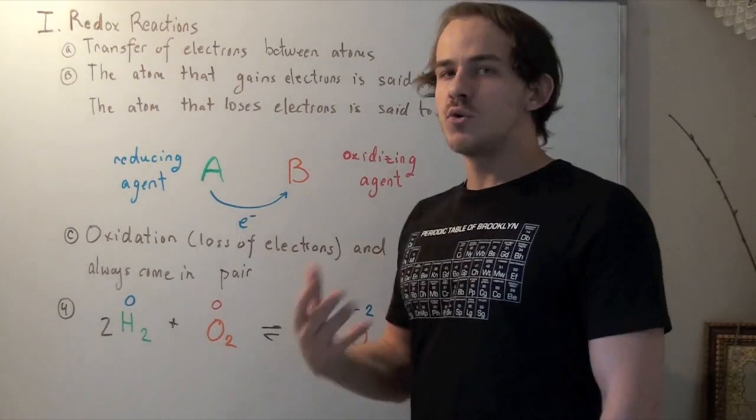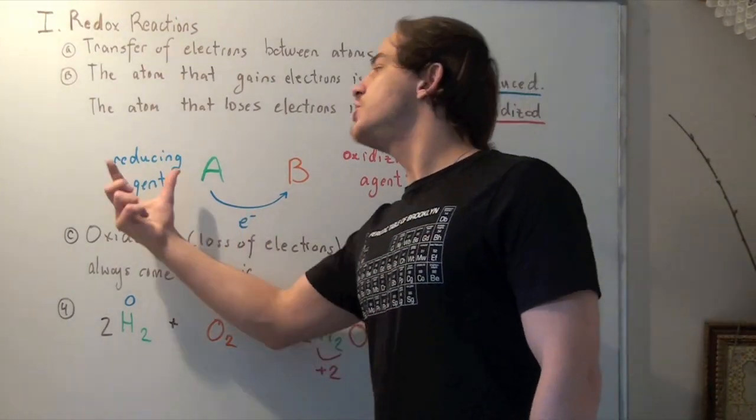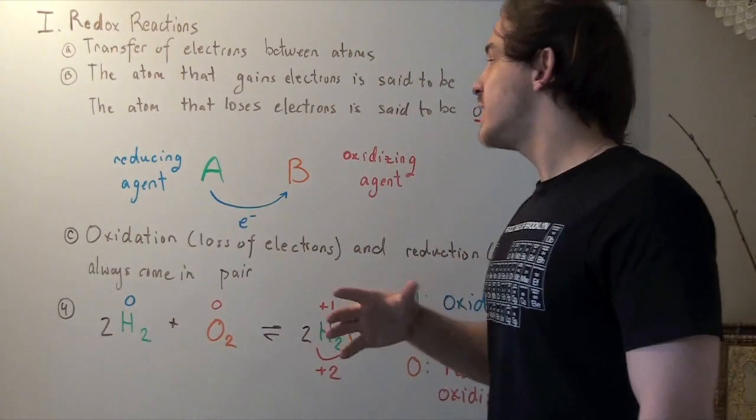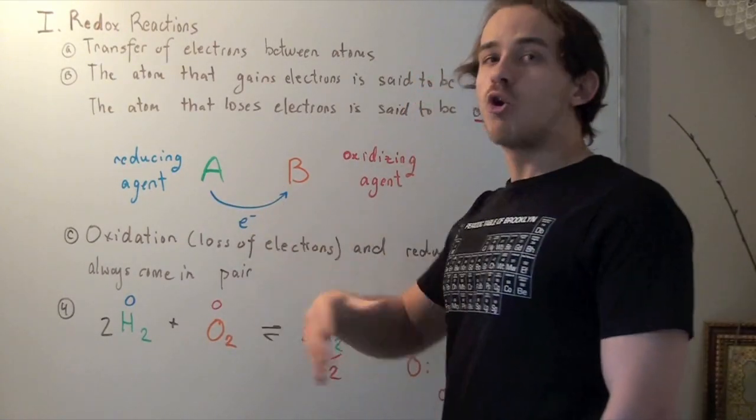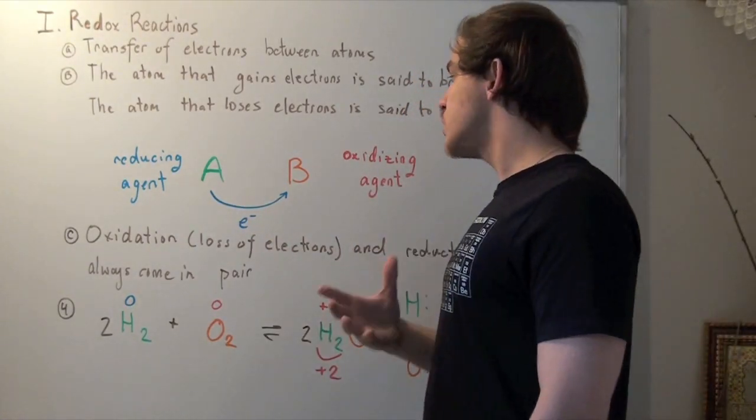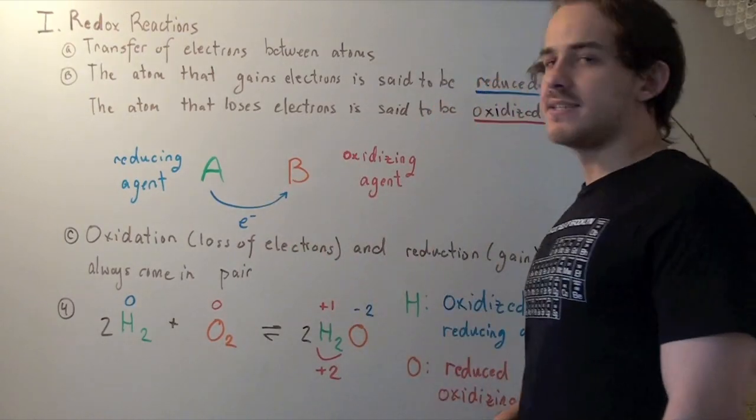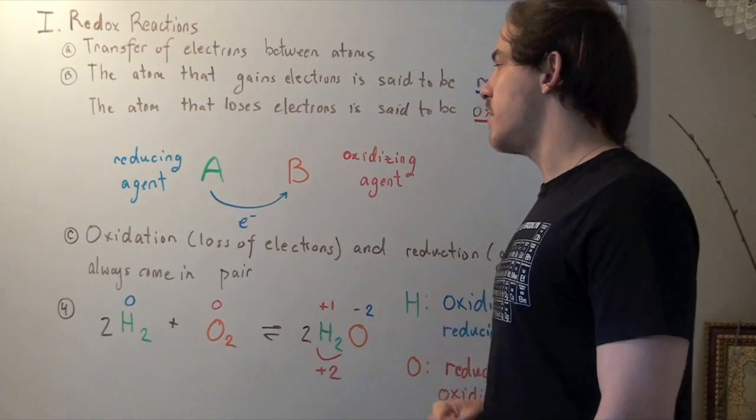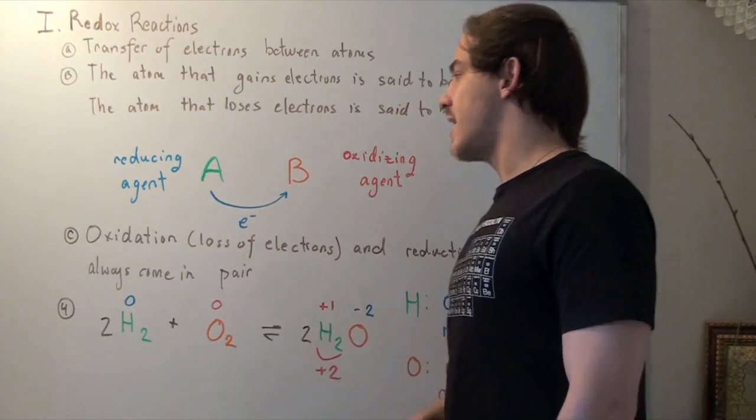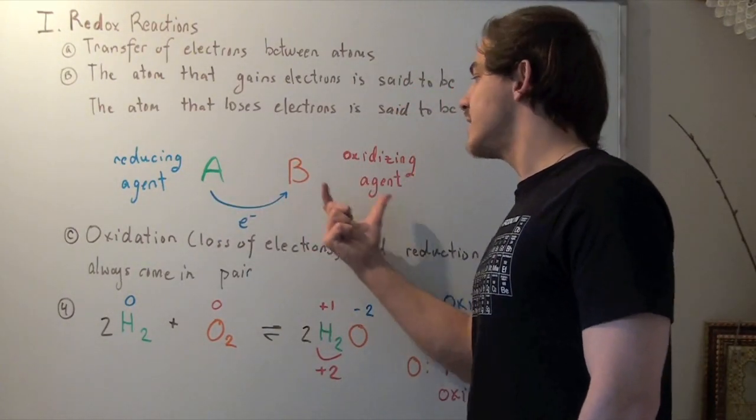Now we can also look at it another way. Atom A is a reducing agent because it reduces atom B. It makes this atom more negative. We can also look at atom B as an oxidizing agent, because atom B takes away that electron from A and oxidizes A.